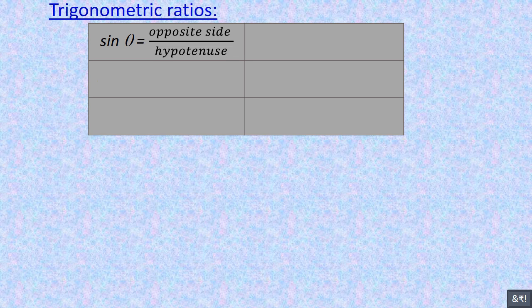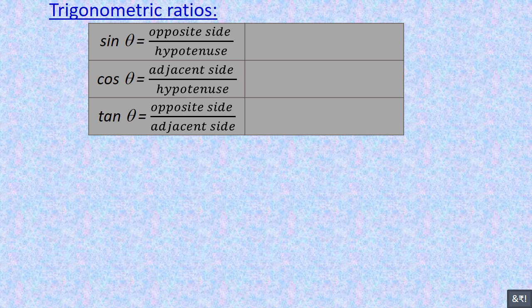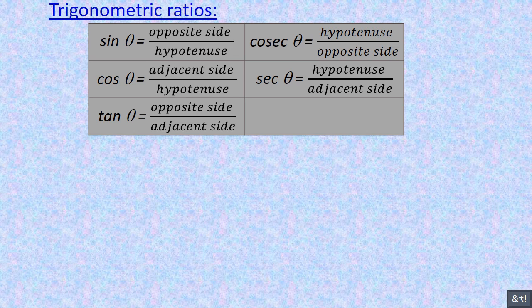Once again we can repeat the trigonometric ratios. Sin θ = opposite / hypotenuse, cos θ = adjacent / hypotenuse, tan θ = opposite / adjacent, cosec θ = hypotenuse / opposite, sec θ = hypotenuse / adjacent, cot θ = adjacent / opposite.